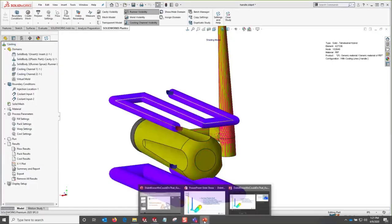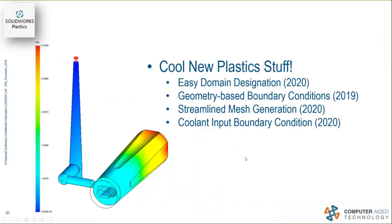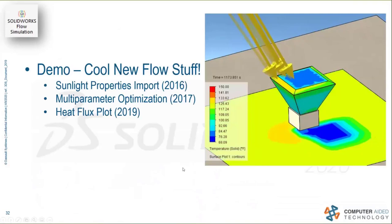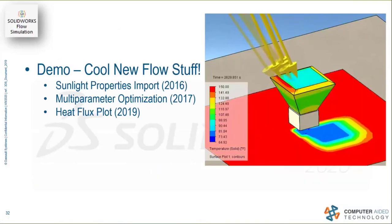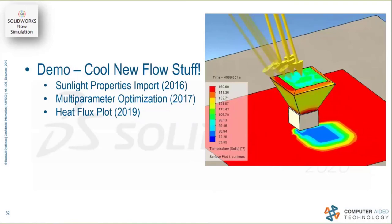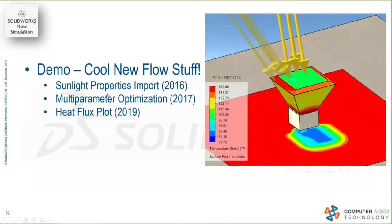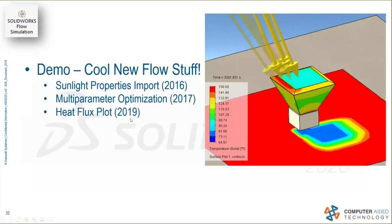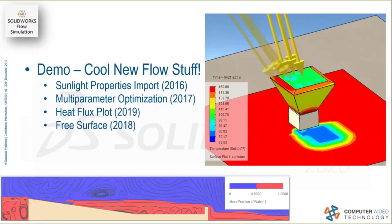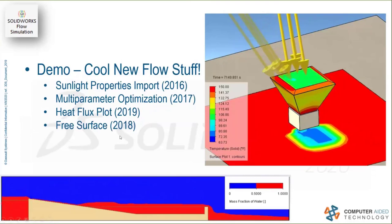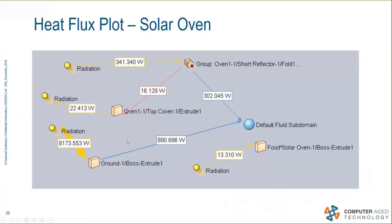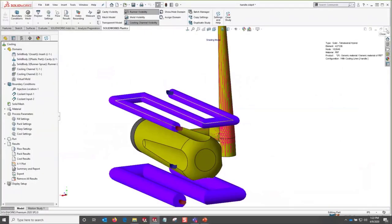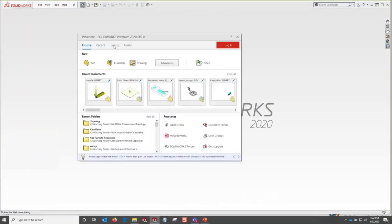All right, I showed you the domains, geometry-based boundary conditions, mesh generation, and coolant input for Plastics. Let's jump into Flow Simulation. We didn't have any flow simulation users in the poll, but hopefully you'll see some good stuff you can use. We've got functionality from 2016 where you can import sunlight properties set up on the CAD side, a multi-parameter optimization tool from 2017, a heat flux plot in 2019, and the highly sought-after free surface functionality that came in 2018.